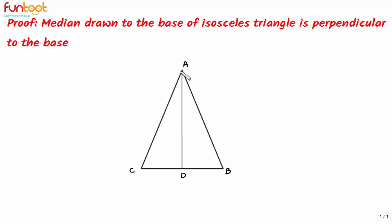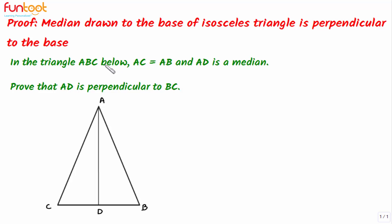Let's prove that in an isosceles triangle, the median drawn to the base is perpendicular to the base. AD is the median, meaning it is a line that joins the opposite vertex of a side to its midpoint. So D is the midpoint of side BC, and BC is taken as the base. We are given that in triangle ABC, AC is equal to AB, and AD is the median.